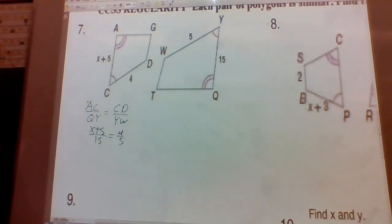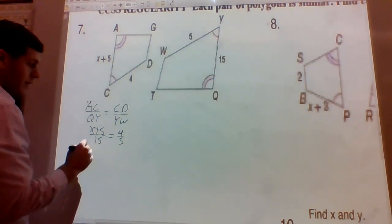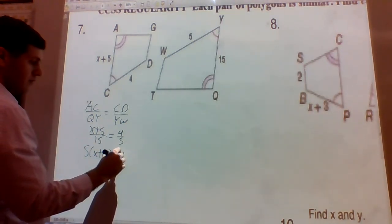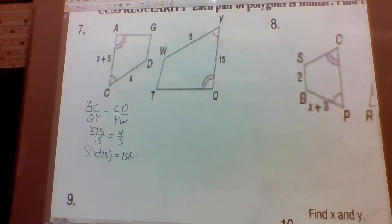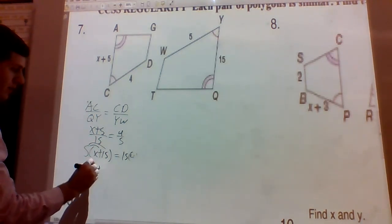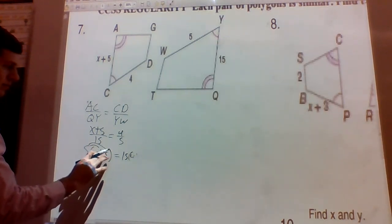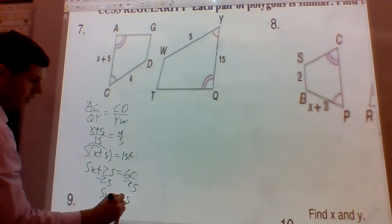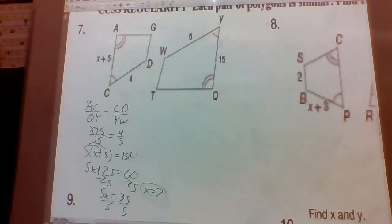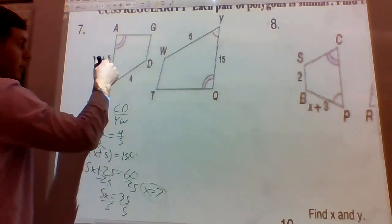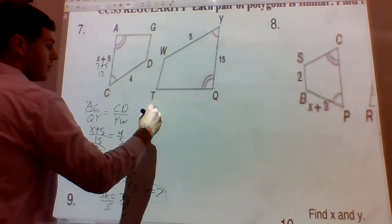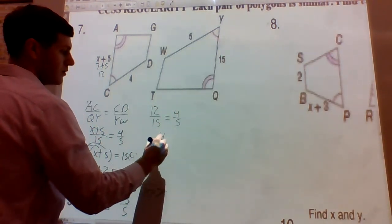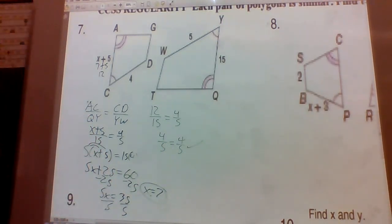Plugging in x equals 7: seven plus five is 12, so we get 12 over 15 equals four over five. That reduces to four-fifths, and 12 divided by 15 is 0.8. So x equals seven is confirmed.